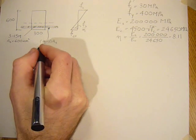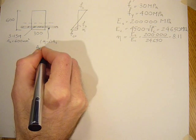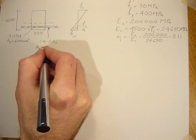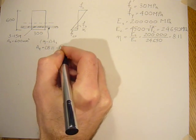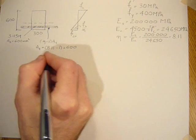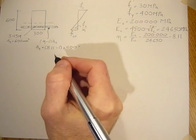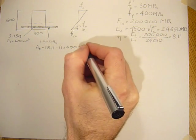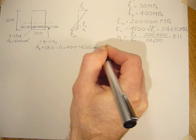So we can find the area transformed of the steel AT as 8.11 minus 1 times 600 mm squared. That would equal 4,266 mm squared.